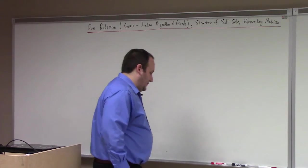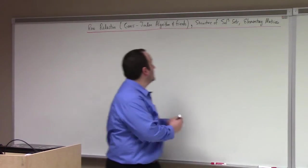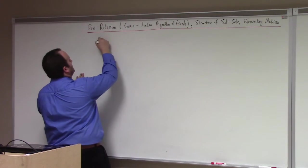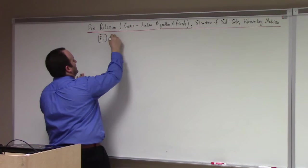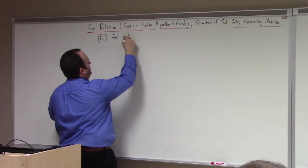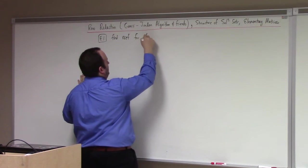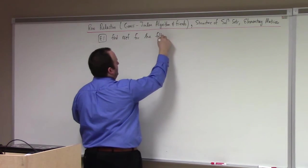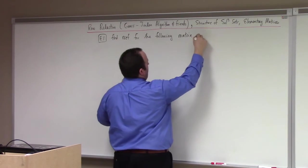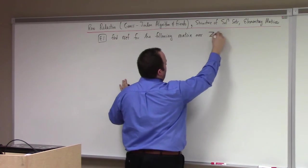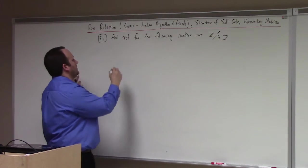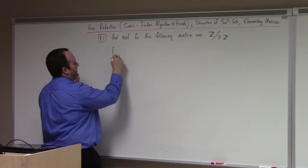So I think I'm going to start with an example for you guys. Let's try to calculate — find the reduced row echelon form for the following matrix over Z mod 3Z.